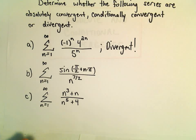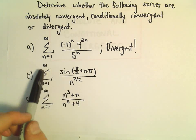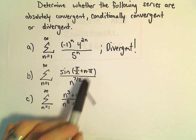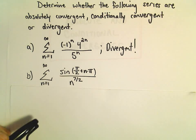Alright, here we've got another series. We're going to ask ourselves whether it's absolutely convergent, conditionally convergent, or divergent. So n equals 1 to infinity, sine of pi over 2 plus n pi, over n to the 7 halves power.